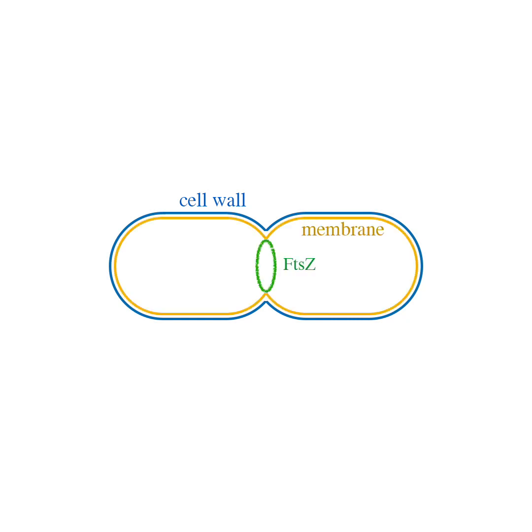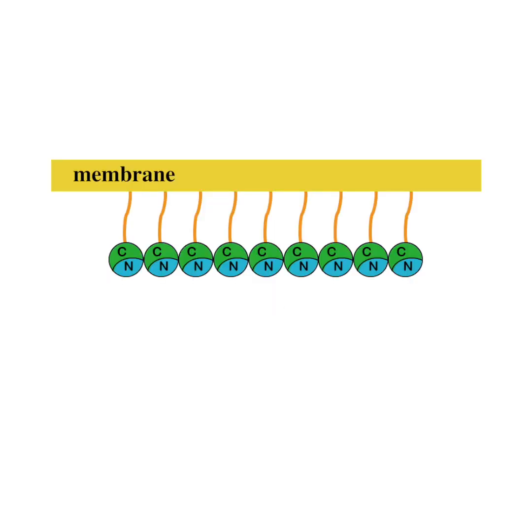Currently, the best candidate for the force generator is the tubulin homolog FtsZ, which has a ring-like localization at the mid-cell. FtsZ forms filaments that are connected to the membrane via flexible C-terminal linkers.